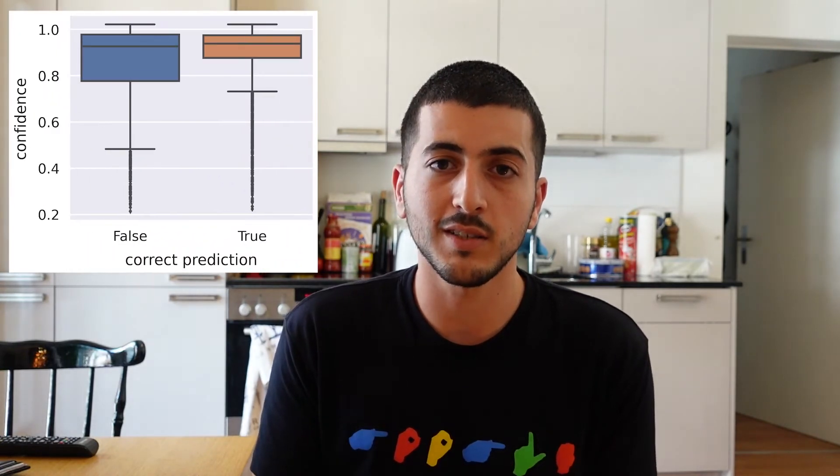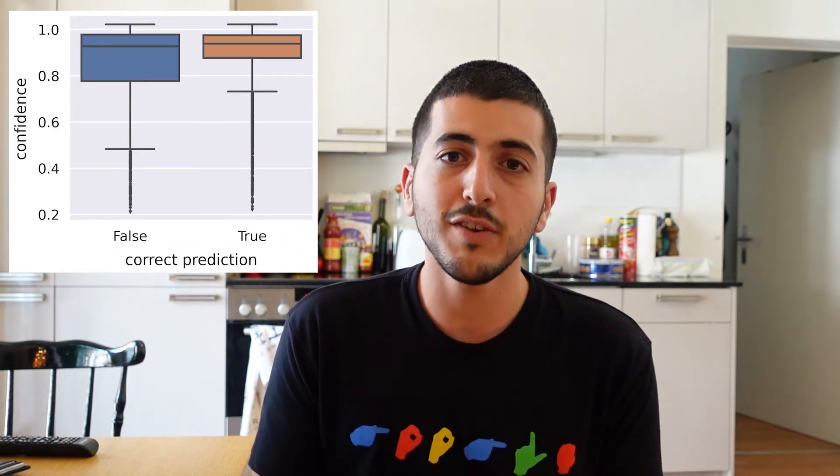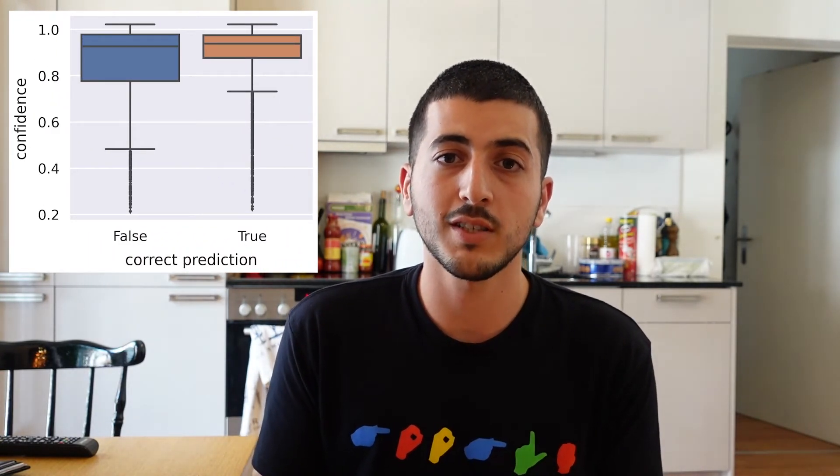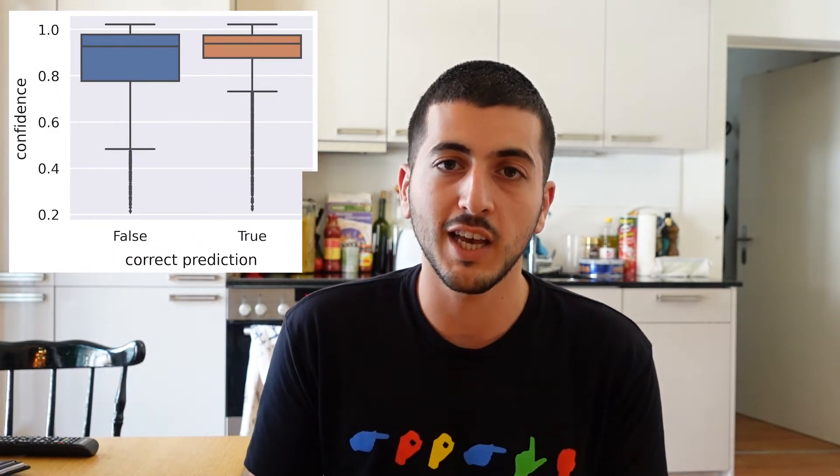In MediaPipe Holistic, the model sometimes fails to detect the hand and so omits it entirely. We found that given a video, the percentage of frames in which the hands are present significantly corresponds with our model's success in classification.